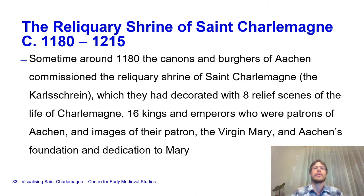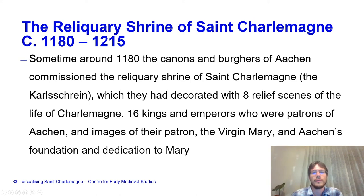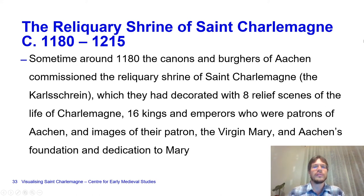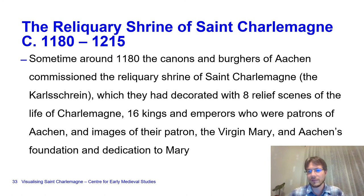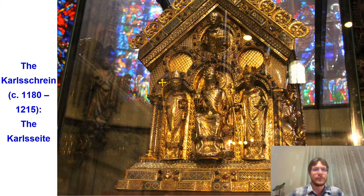There was also the reliquary shrine of Saint Charlemagne. Sometime around 1180, the canons and burghers of Aachen commissioned the Karl Shrine, which was decorated with eight relief scenes of the life of Charlemagne, 16 kings and emperors who were patrons of Aachen, and images of their patron the Virgin Mary and Aachen's foundation and dedication to Mary. We know it dates to around 1180 because the wood has been dated dendrochronologically to 1183. This is essentially within the age of Frederick Barbarossa.